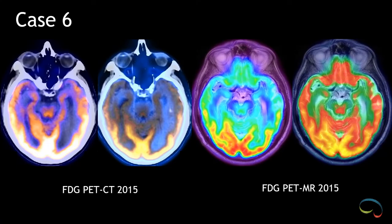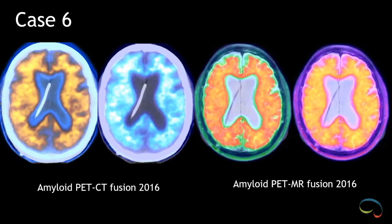The same NPH patient also came for an FDG brain PET CT in 2015, demonstrating cortical hypometabolism in the bilateral temporal lobes, which was statistically significant only on the left side. And finally, this patient came back for an amyloid PET CT study in 2016. You can see the shunt in place and the diffuse binding of the amyloid tracer to the amyloid plaque in the cortex.